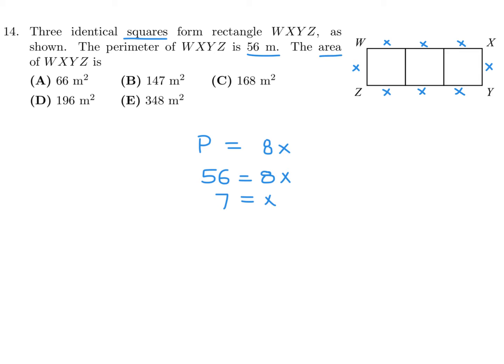Now they want the area. The area is length times width. The length is 3x and the width is x, so that is 3x squared. Since x is 7, that's 3 times 7 squared, which is 3 times 49, which is 147. So the answer is B.